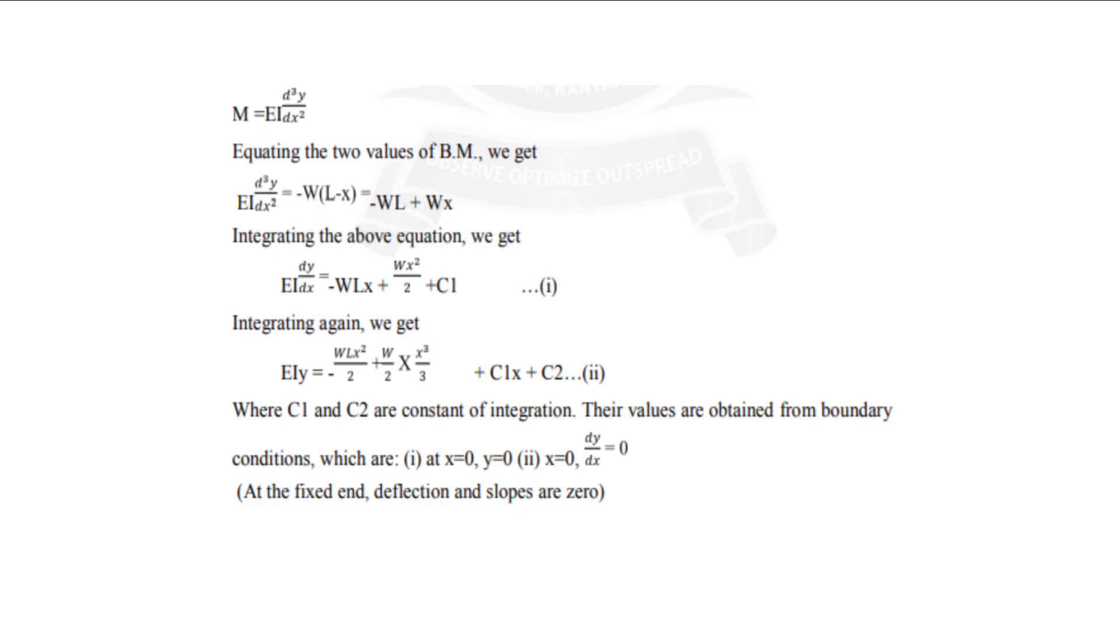Integrating, we get EI dy/dx = -WLx + Wx²/2 + C1 constant. Integrating again we get EIy is equal to -WLx²/2 + W/2 × x³/3 + C1x + C2 constant.